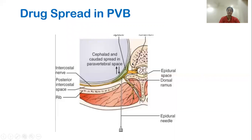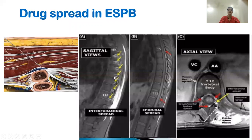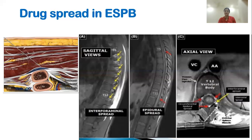The drug spreads in the paravertebral space medially into the epidural space, laterally into the intercostal space, with cephalocaudal spread of two to three segments above and below the site of injection. In the erector spinae, the spread is in the craniocaudal direction, three to four levels from C7 to T8, giving a multidermatomal sensory block.